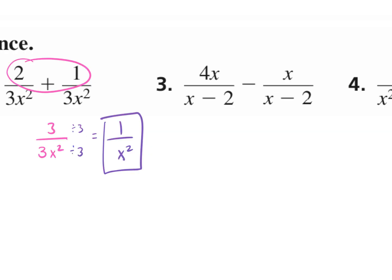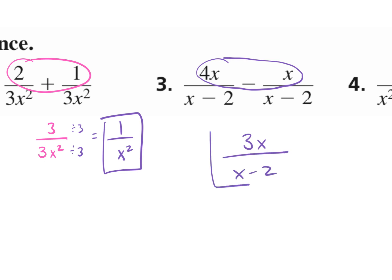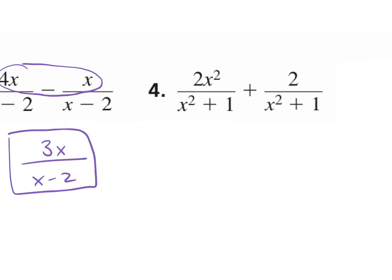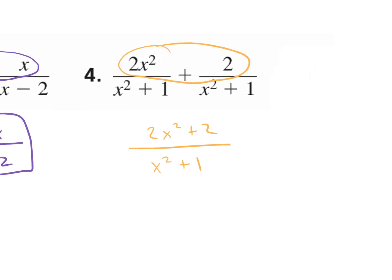For number 3, subtract the numerators. What's 4x minus x? That's 3x, so we get 3x over x minus 2. For number 4, add the numerators. We get 2x squared plus 2 over x squared plus 1, because the denominator stays the same. Do you think this could be simplified?